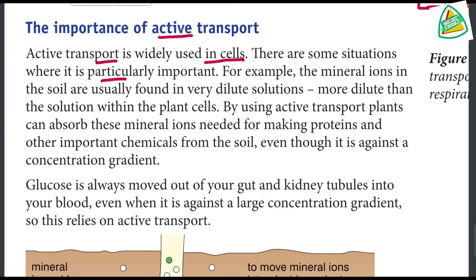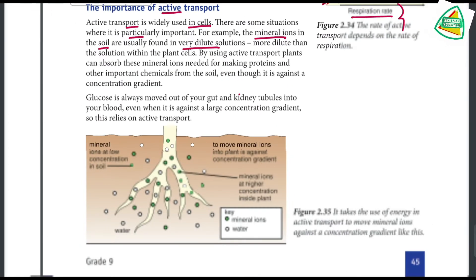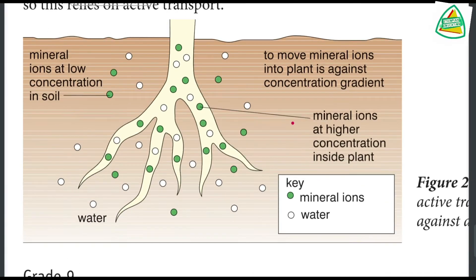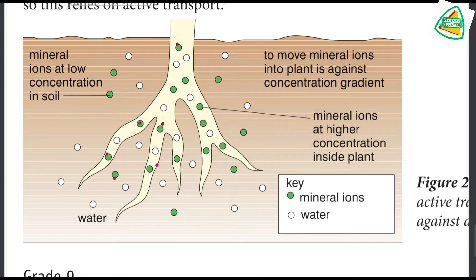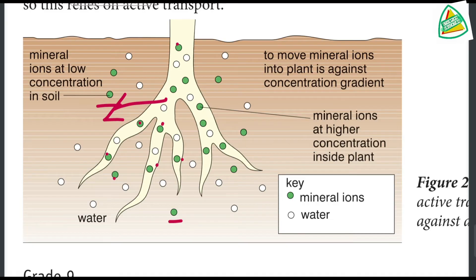There are some situations where active transport is particularly important. For example, mineral ions in the soil are usually found in very dilute solutions. The concentration of minerals inside the root is already higher than in the soil, so active transport is needed to absorb them.